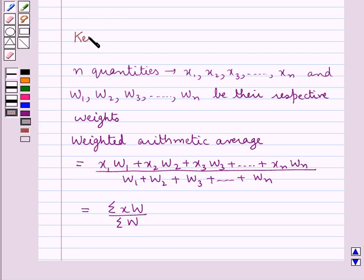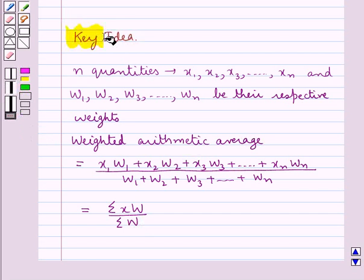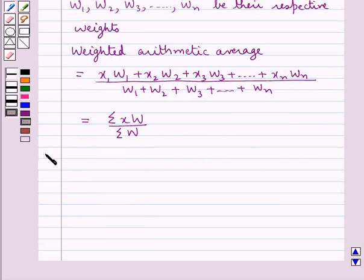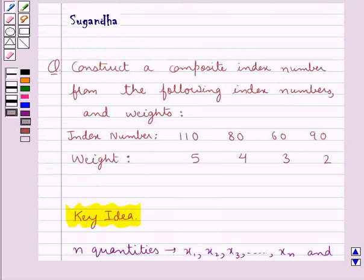This is the key idea that we use for this question. Let's proceed with the solution now. In the question we are given the index numbers and the corresponding weights. So we can take these index numbers as the quantities.